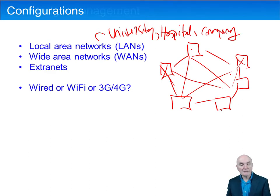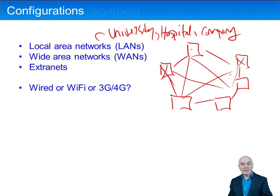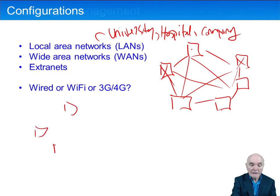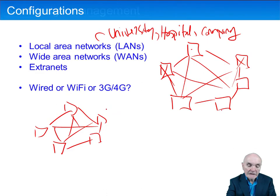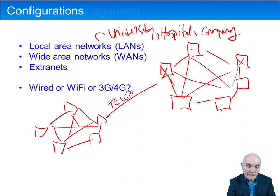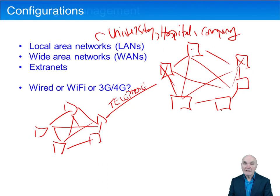A wide area network typically has components that are geographically separate — you could have people in different towns or different countries. So you might have your UK office with its local area network and then in Frankfurt your German company with its network. You can't really lay down your own cable between Frankfurt and London, so what it uses is public communication systems — basically the telephone system — transmitted very quickly, and this links remote installations into a wide area network.